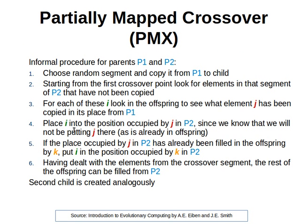Now, the partially mapped crossover algorithm works as follows. Please pay attention — it can be confusing. On the next slide we have an example which will hopefully make things clearer. If you don't get it first time, there's no harm in watching it again. So, we have two parents, P1 and P2. We randomly choose a segment and copy it from P1 to the child.